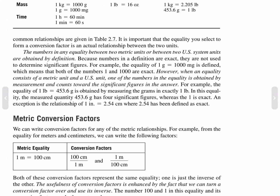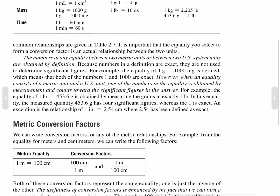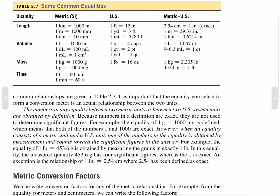Some common relationships are given in section 2.7. It is important that the equality you select to form a conversion factor is an actual relationship between the two units. The numbers of any equality between two metric units or between two US system units are obtained by definition. Because numbers in a definition are exact, they are not used to determine significant figures. For example, the equality of 1 gram equals 1000 milligrams is defined, meaning both 1 and 1000 are exact.